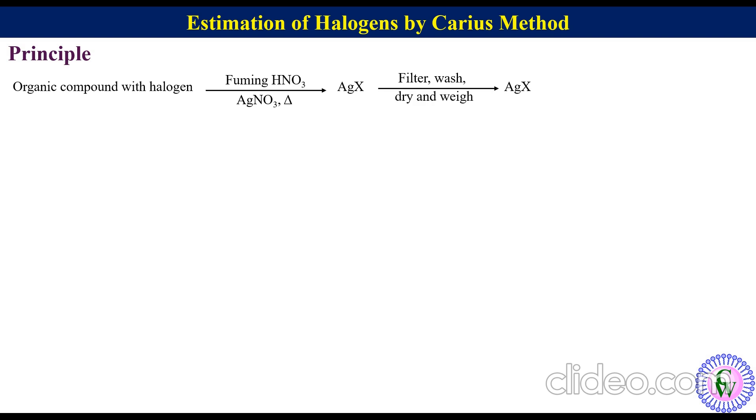Suppose mass of organic compound is capital W grams. Mass of silver halide is small w grams. So mass of halogen will be equal to molar mass of halogen times mass of silver halide upon molar mass of silver halide.